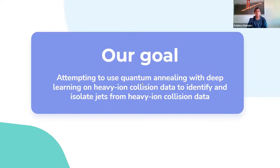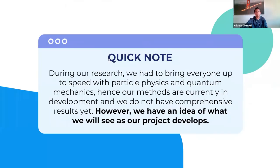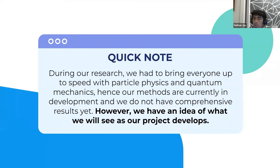Our goal: our team is attempting to use quantum annealing with deep learning on heavy ion collision data to identify and isolate jets from it. A quick note — during our research over the past month or two, we had to bring everyone up to speed on particle physics and quantum mechanics. Our methods are still currently in development and we don't have comprehensive results yet, but we do have an idea of what we will see as our project develops.